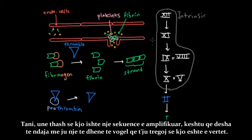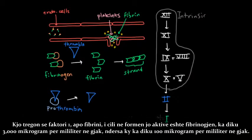Now, I said that this was an amplification sequence, and so I just wanted to share a little data to show that that's true. So it turns out that this guy, factor 1 or fibrin, in its inactivated form which is fibrinogen, has about 3,000 micrograms per milliliter in blood, while this guy has about 100 micrograms per milliliter in blood.